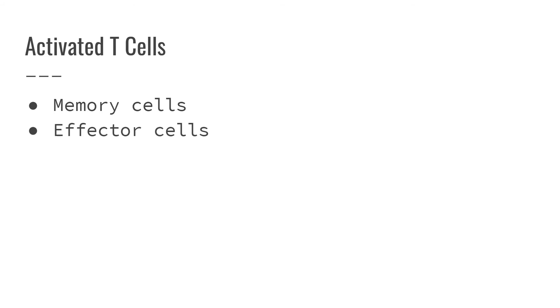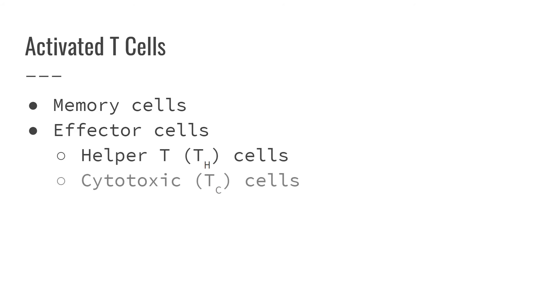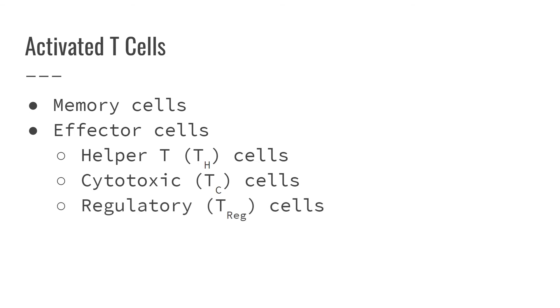After a T cell becomes activated through antigen presentation and double recognition, it's going to form memory cells and effector cells. With humoral immunity it made memory cells and plasma cells that secreted antibodies. This time we have three different types of effector cells: helper T cells, cytotoxic T cells, and regulatory T cells.